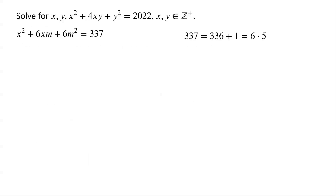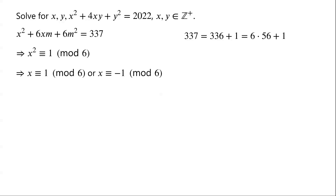We know that 337 equals 336 plus 1, which can be written as 6 times 56 plus 1. That is to say, 337 is congruent to 1 modulo 6. This implies that x squared is congruent to 1 modulo 6. So either x is congruent to 1 modulo 6, or x is congruent to negative 1 modulo 6.